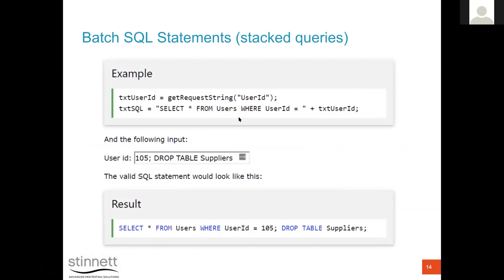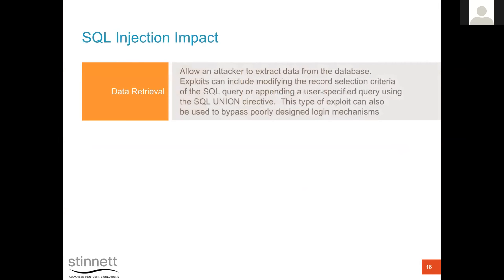Stacked queries let you send multiple SQL statements at once. For example, you inject: go get user ID 105, then a semicolon, then DROP TABLE suppliers. The SQL query now executes both: it returns ID 105 and also drops the entire suppliers table. Once you have stacked queries working, you can do really powerful and dangerous things.